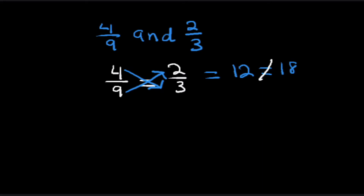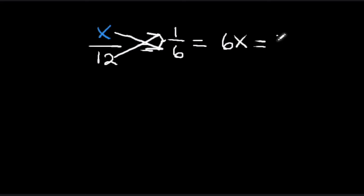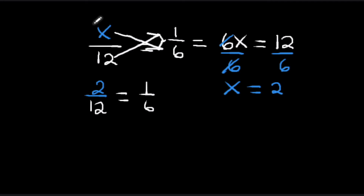Let's solve for x. We set up a proportion: x over twelve equals one over six. We cross multiply: x times six is six x, and twelve times one is twelve. So six x equals twelve. We isolate x by dividing by six on both sides — the sixes cancel — leaving x equals twelve divided by six, which is two. Therefore, two over twelve equals one over six, and x is equal to two.